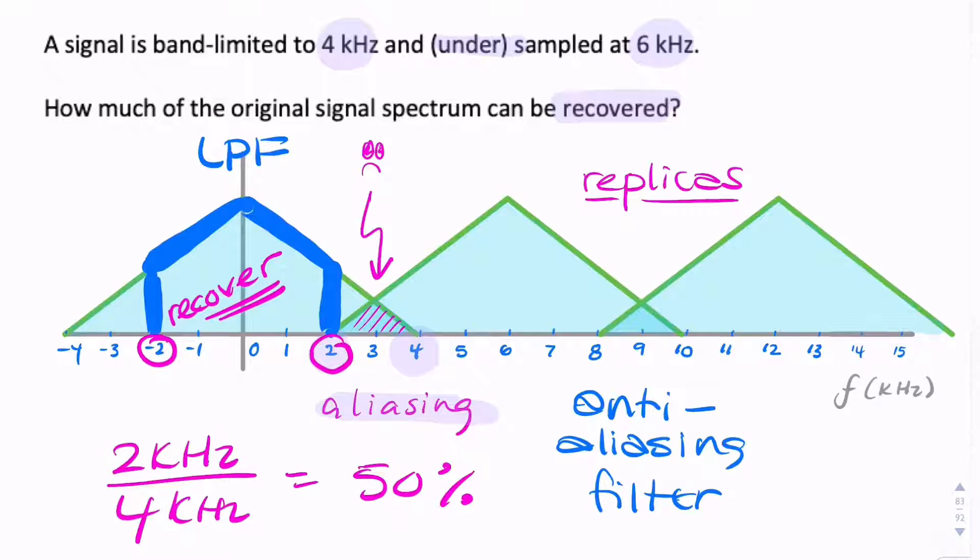Now, we could have applied this filter or a similar filter before aliasing happened. And that would also be called an anti-aliasing filter. And it would probably be better to apply the signal before sampling because then aliasing wouldn't have happened. And I'll explain this again in a further video.